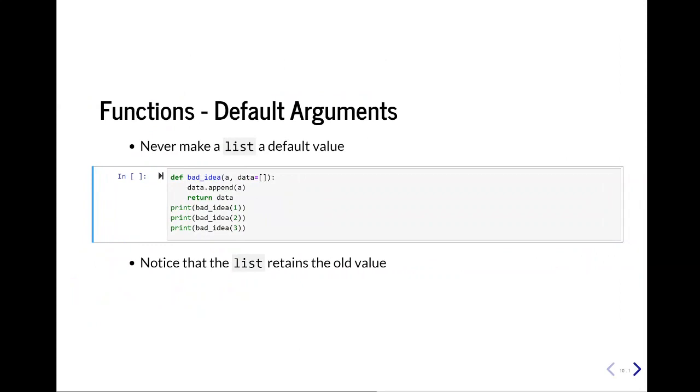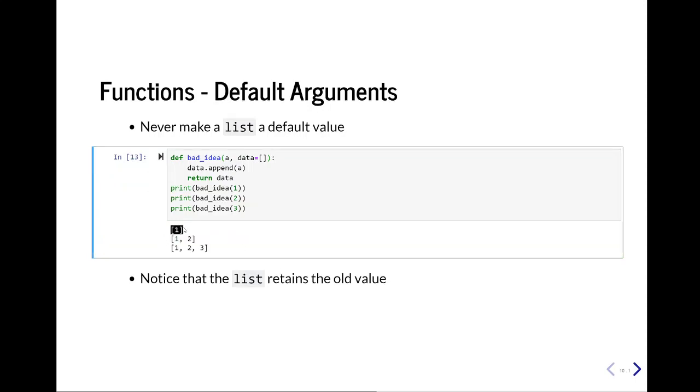Something that I want to point out, and you might encounter along the way, is that you never really want to make a list a default value. And the reason is, I'll just show you. So here we have our function bad idea in a variable a, and data equals an empty list. Every time we pass in a, it should append a to that empty list, or so you would think. So we're going to append three numbers to our default value of empty list. Notice every time the value stays within our list, and it reuses that data value. In order to get around this, it's better to do something like this.